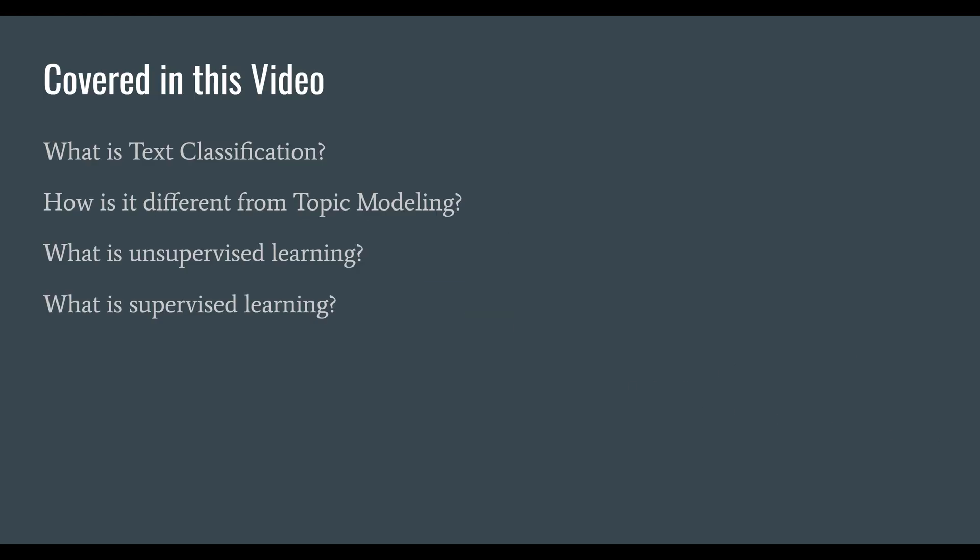And if you don't know what text classification is right now, don't worry — you will by the end of the video. What we're going to cover is what text classification is, how it differs from topic modeling from part three, and how it's different from TF-IDF and K-Means clustering from part two. We'll also talk about unsupervised and supervised learning — machine learning methods for training models. We've actually seen unsupervised learning in parts two and three, and understanding both is what separates text classification from LDA topic modeling or TF-IDF K-Means clustering.